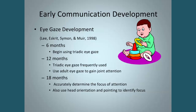As the child further develops, at six months they begin using triadic eye gaze, meaning they're soliciting eye gaze from multiple partners. By 12 months, they use this gaze really frequently. They may search the room to make sure everybody's looking at them or excited by what they did, and they use adult eye gaze to gain joint attention — following whatever the adult is looking at. By 18 months, they accurately determine the focus of that attention.